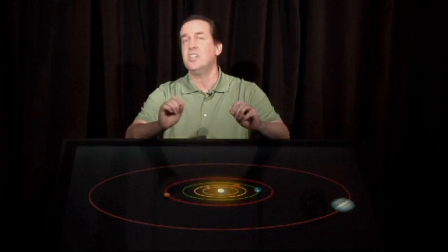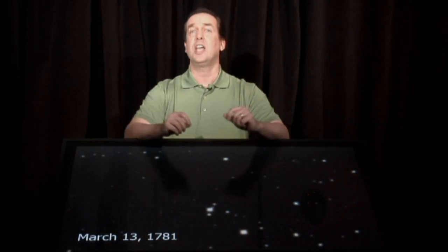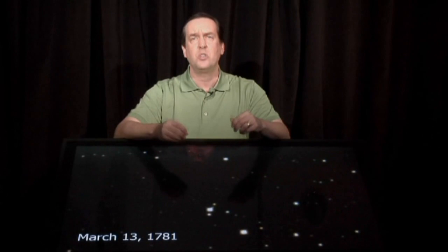We did, however, discover other planets in our solar system, and we didn't discover the first one until 1781. In 1781, William Herschel was looking at double stars in the sky. He was doing a study about double stars, and he was looking at the constellation Taurus, and we've recreated it here.